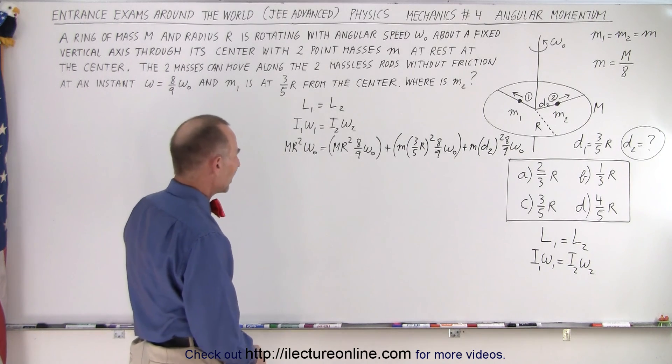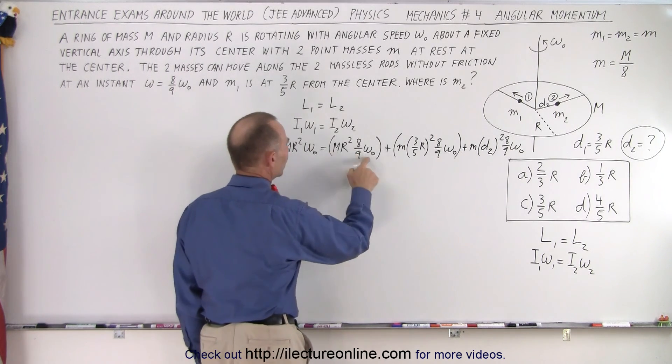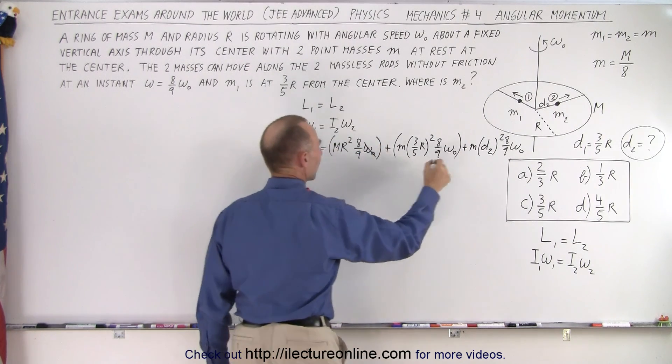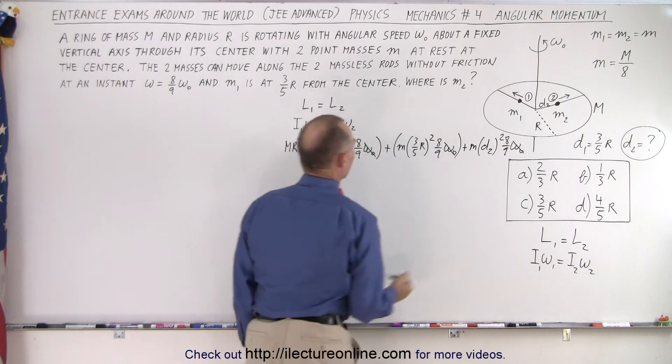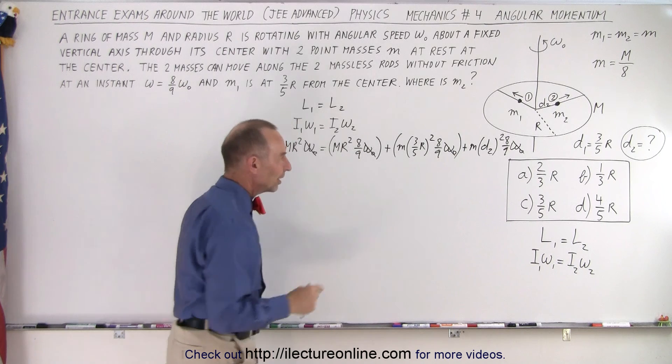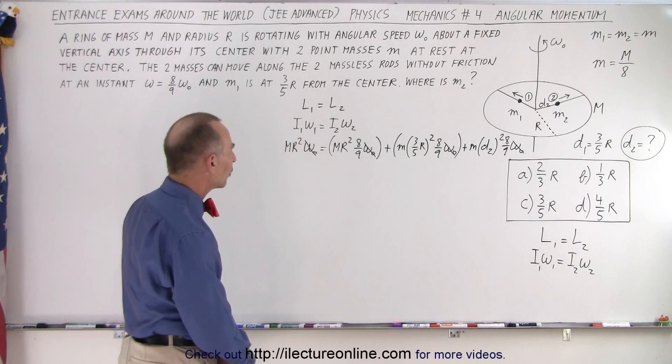We can simplify things by realizing that omega sub-naught appears in every term, so that can go away. And we have r squared, r squared, r squared, and d squared. Unfortunately, the r squared does not go away.